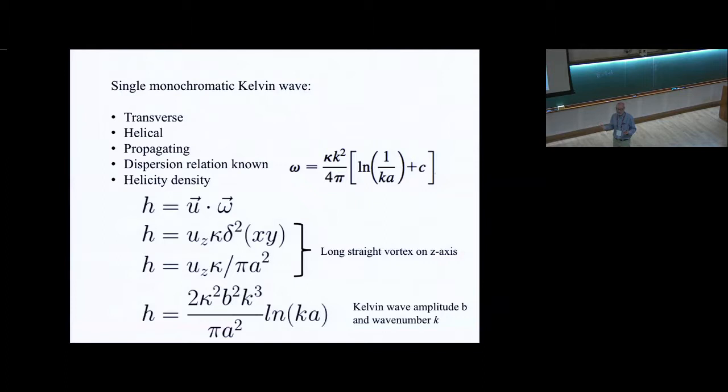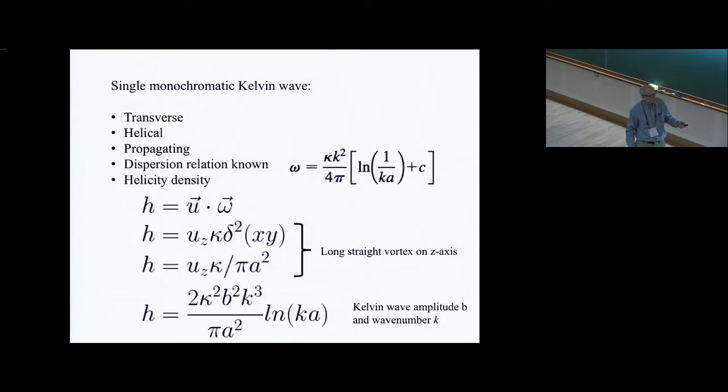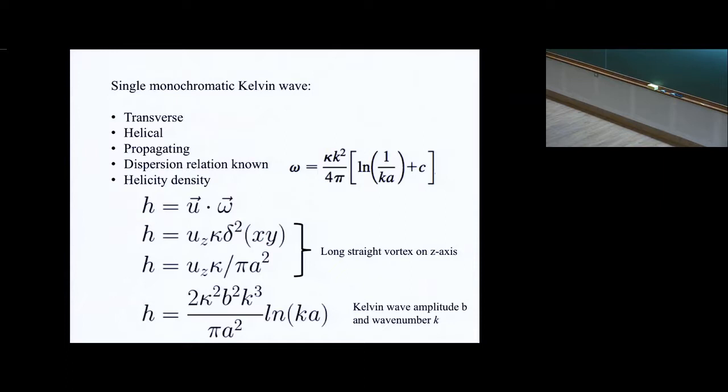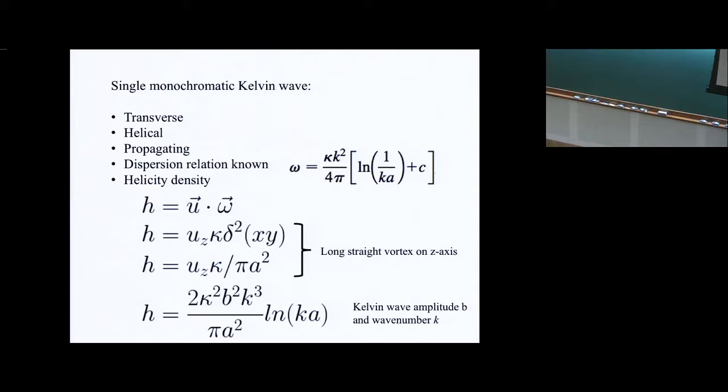Stepping back from quantum fluids, think of a long straight vortex passing through this room, an ideal vortex. Lord Kelvin says there are these transverse helical propagating waves on that. As you turn up the amplitude of that wave, the wave itself generates velocity along the vortex at other locations. The helicity density along the core actually depends in sensible ways on the wave number and the amplitude and the quantum of circulation.